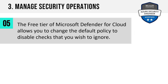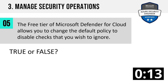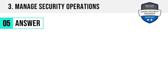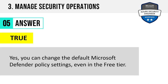Intelligence, hybrid threat protection — things formerly called advanced threat protection — and regulatory compliance all require the standard tier of functionality. But there's quite a lot of capability in the free tier off the shelf. Question 5. The free tier of Microsoft Defender for Cloud allows you to change the default policy to disable checks that you wish to ignore. True or false? The answer is true. You can change the default Microsoft Defender policy settings even in the free tier.